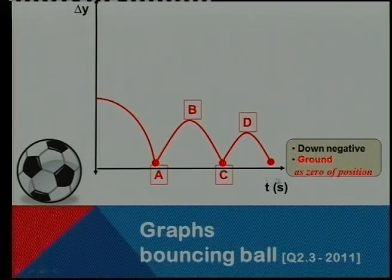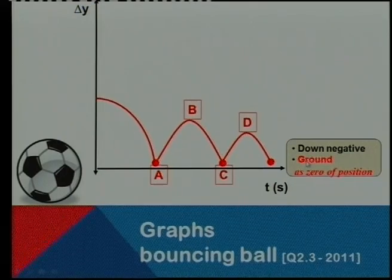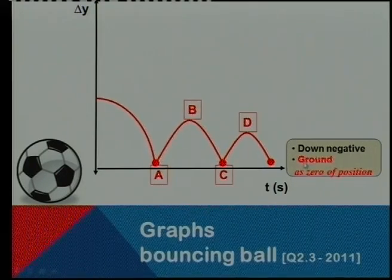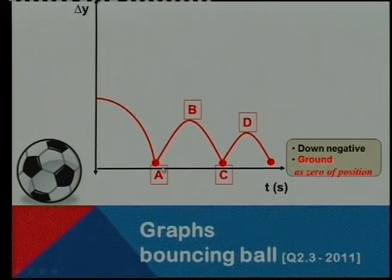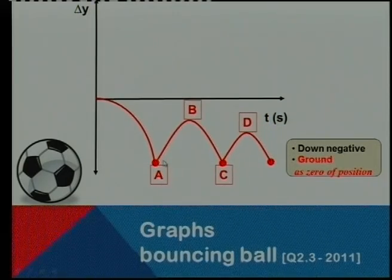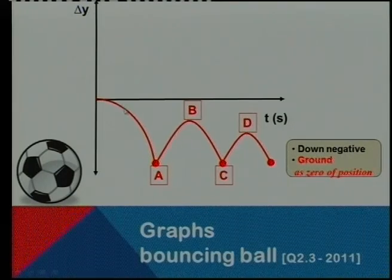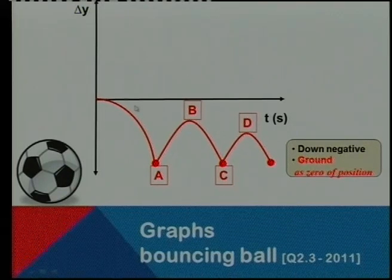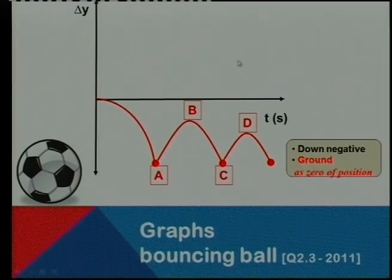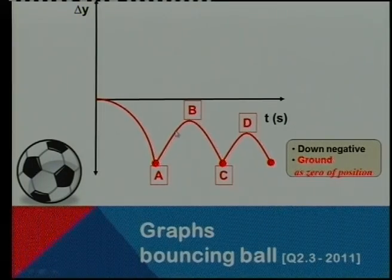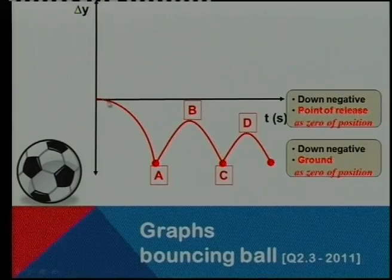So the ground is zero position. You need to learn this term because the examiners these days would like to use and give you a direct instruction where to put your time axis. If we now shift this axis slightly, let's say till there, is down still negative? Yes, down is still negative. You can see it if you put a gradient or a slope there, you will see the slope focuses in a negative direction. That means down is still negative, but the point of releasing the ball is now the zero position.